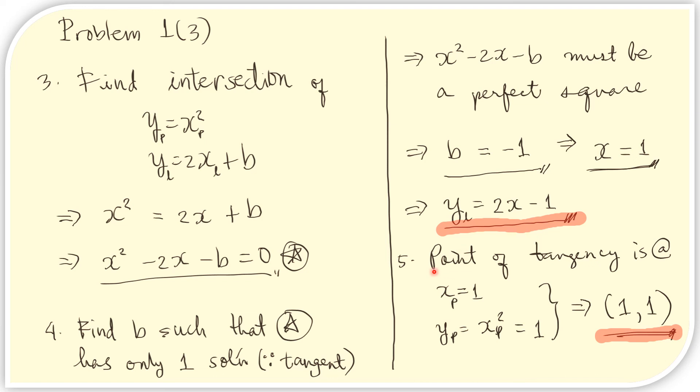Finally, we can compute the point of tangency, that is at x equals 1. So we can substitute this value to the x here or to the x here or to the x here. It doesn't matter because they all have the same value at the point of tangency. Let us use the parabola. We substitute 1 for xP here. And so that will become y sub P equals 1 squared and we obtain 1. Thus, the point of tangency is at (1, 1).